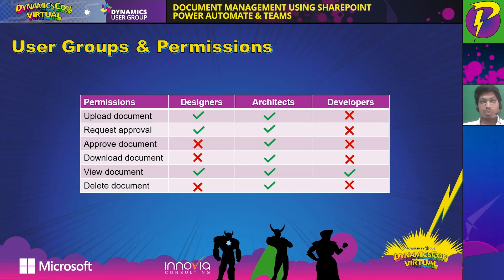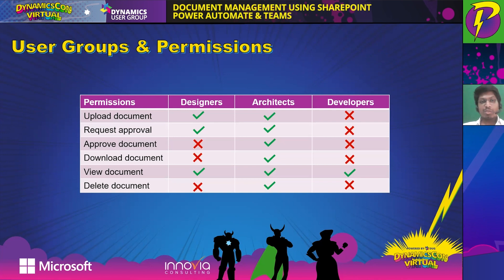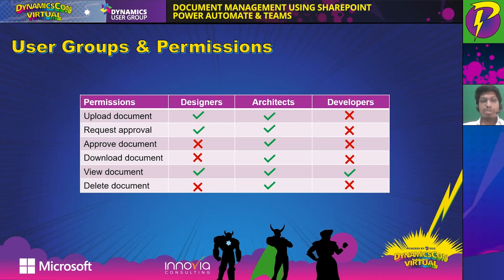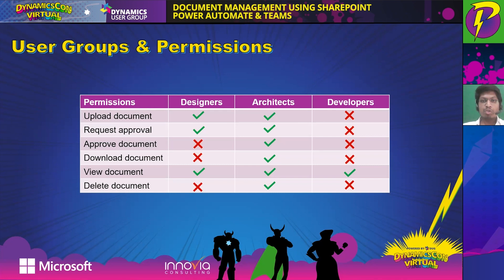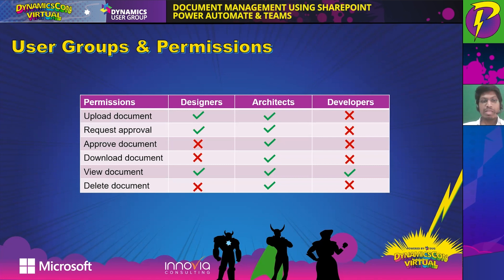These are the permission levels for each user group in respect to SharePoint. Designers have permission to upload documents and request approvals, but cannot approve, download, or delete documents — they can only view. Solution architects are our super-level users with permission to do everything on the document library. Developers only need to view documents and require no other permissions.